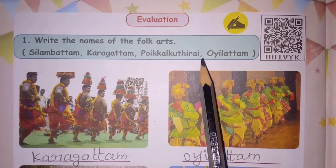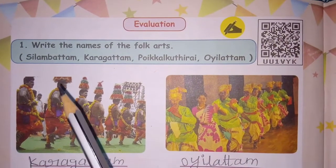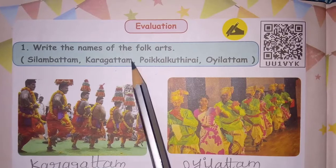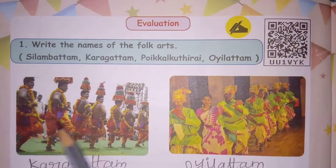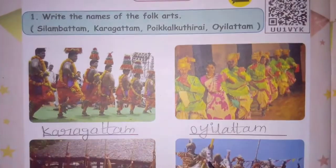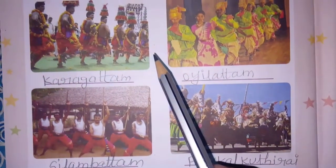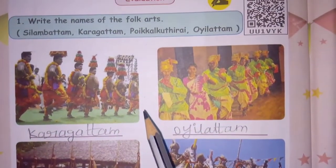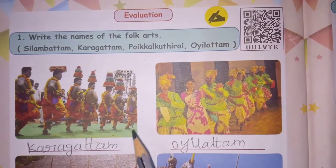Now we are going to go through the textbook back questions. Children, what is the first main? The task is to write the names of the folk arts. Here, different types of folk arts are given. We want to observe the pictures and based on the picture we are going to give the name of that folk art.